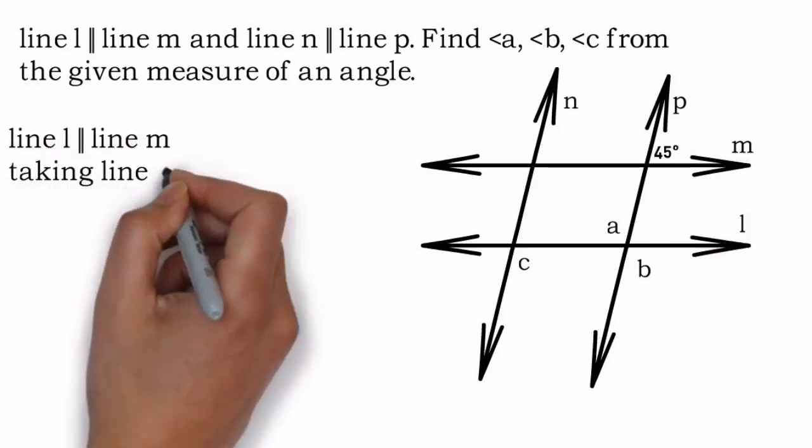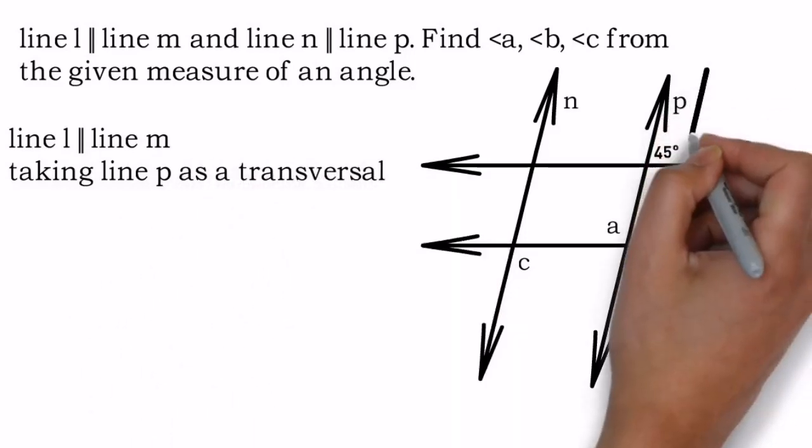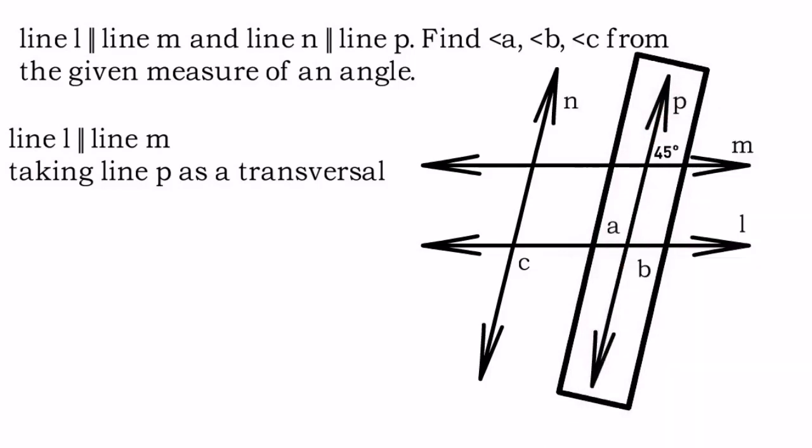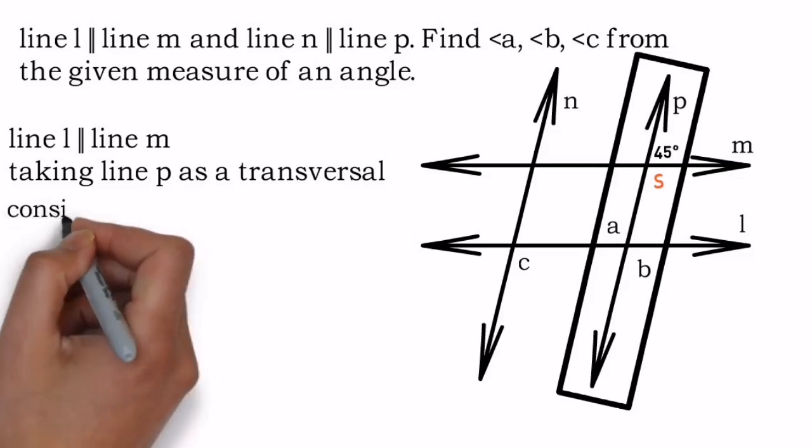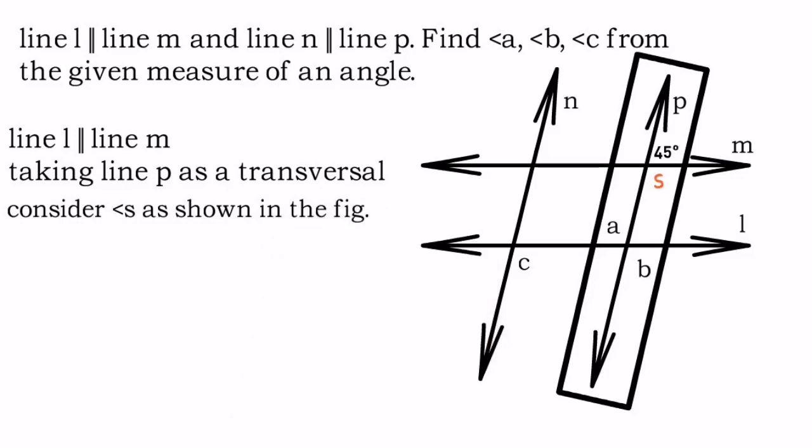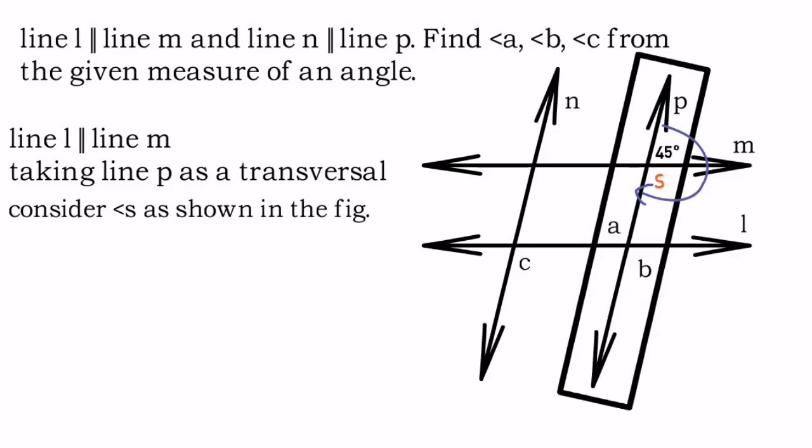If you observe the diagram carefully, there is some relation between a, b, and 45 degrees. First, mark p as a transversal. Is there any angle between a and b to link it together with 45 degrees? No, so we have to consider angle s. Now we can say 45 and angle s are linear pair. Once we find angle s, we can say angle s and a are alternate angles, and angle s and b are corresponding angles.